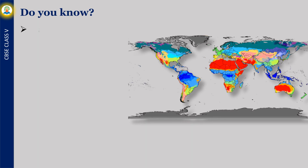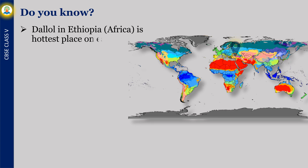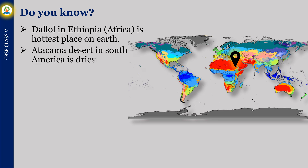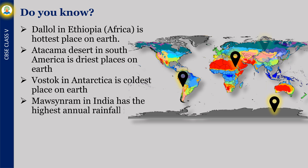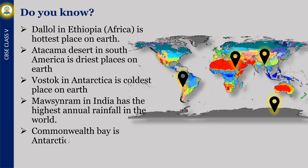Some interesting facts: Dallol in Ethiopia, Africa, is the hottest place on earth. The Atacama Desert in South America is the driest place on earth. The Vostok station in Antarctica is the coldest place on earth. Mawsynram in India has the highest annual rainfall in the world. Commonwealth Bay in Antarctica is the windiest place on earth.